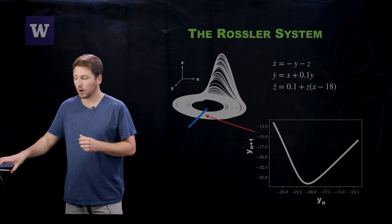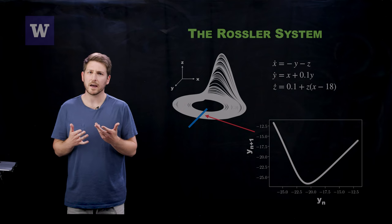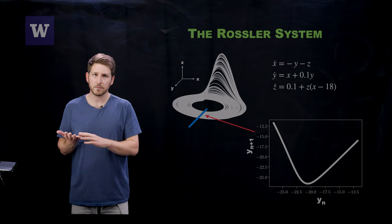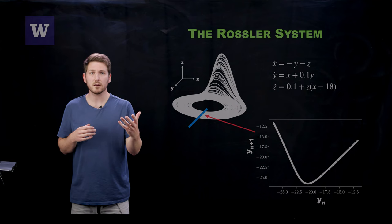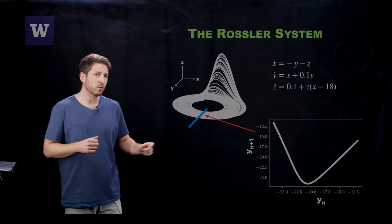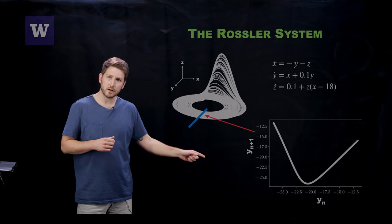Now, for our Poincaré section, we're going to take the x equal to zero plane. And the reason we'll take that is because the Rössler system has a very nice property that when x is equal to zero, necessarily z must be zero as well. So that means that we're really just tracking the single y values each time we go around this attractor.